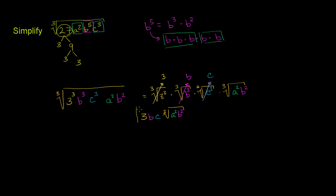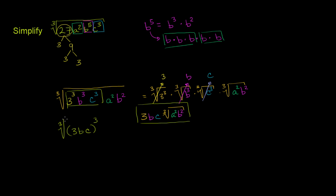And we're done. I also want to show another approach: we could recognize that this expression can be written as 3bc to the third power, since taking three things to the third power and multiplying them is the same as multiplying them first and then raising to the third power — that comes straight from our exponent properties. So we can rewrite this as the cube root of 3bc to the third power times the cube root of a squared b squared. The cube root of 3bc to the third is just 3bc, multiplied by the cube root of a squared b squared — the same answer either way.